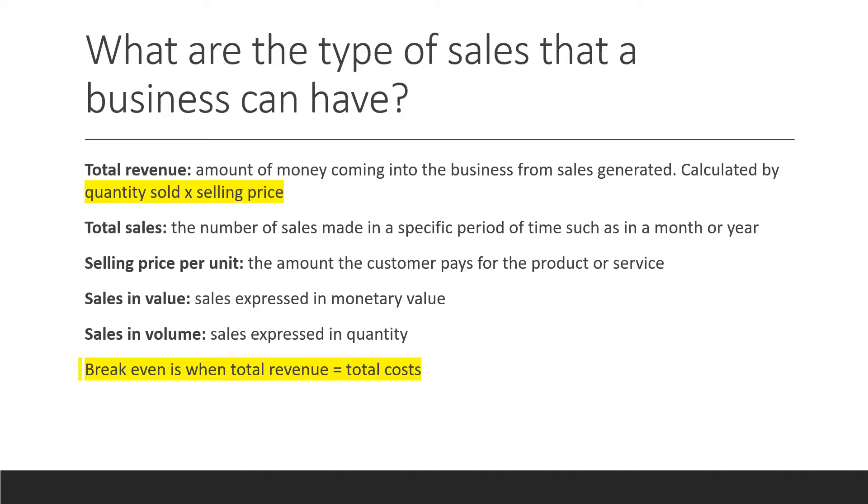Selling price per unit. That is the amount that the customer will pay for the product or the service. Sales in value: sales expressed in monetary value. And sales in volume is sales expressed in quantity.